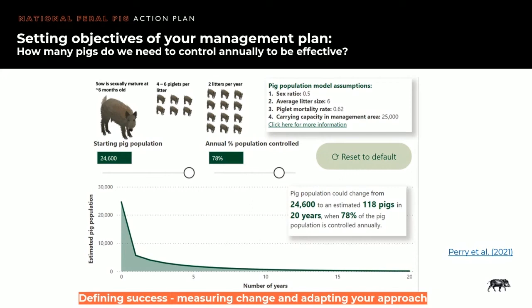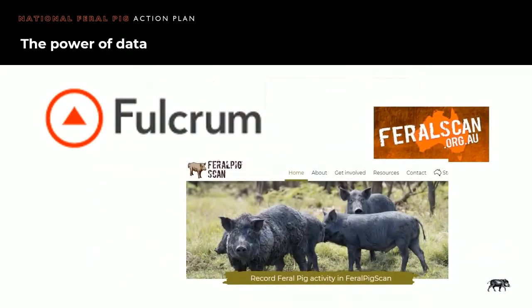Defining what success looks like and capturing and analysing data to enable your management approach to be adapted over time is critical. As we were drafting the plan, it was apparent that little data is captured by land managers to measure the outcomes of control programs on the assets being protected. Most emphasis was being placed on the numbers of pigs dispatched, but that doesn't mean much if we don't know how many pigs were initially there. The Scientific Advisory Panel is now assisting with identifying measures that are easy and quick to collect and meaningful. Monitoring for populations is a necessary part of strategic control, and systems available include the Fulcrum app built by Desert Channels Queensland for land managers to record their data.